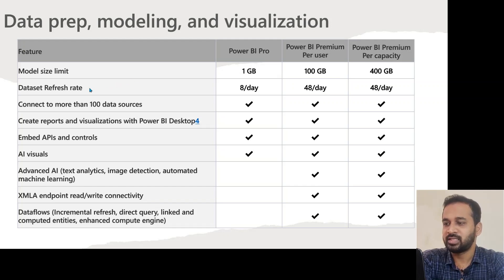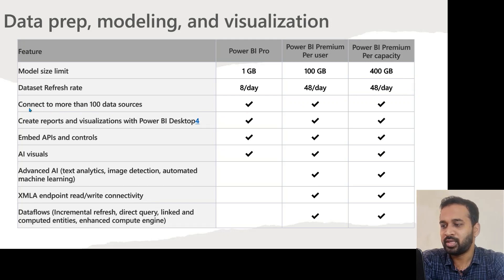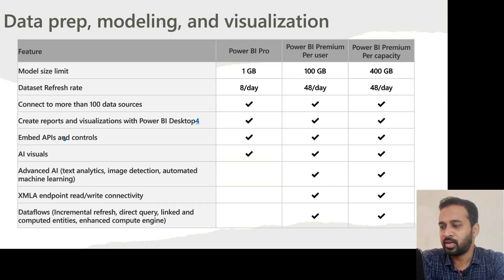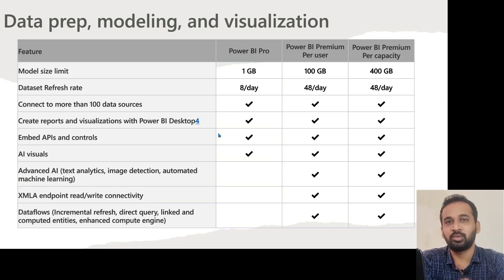The data refresh rate: if you have a Pro license, you can do 8 times a day; if you have PPU, 48 times a day; and if you have Premium Capacity, also 48 times a day. You can connect to 100+ data sources with any of the licenses. You can create reports and visualizations with Power BI Desktop, which is available for all licenses — and even without any license, Power BI Desktop is absolutely free to download and use.